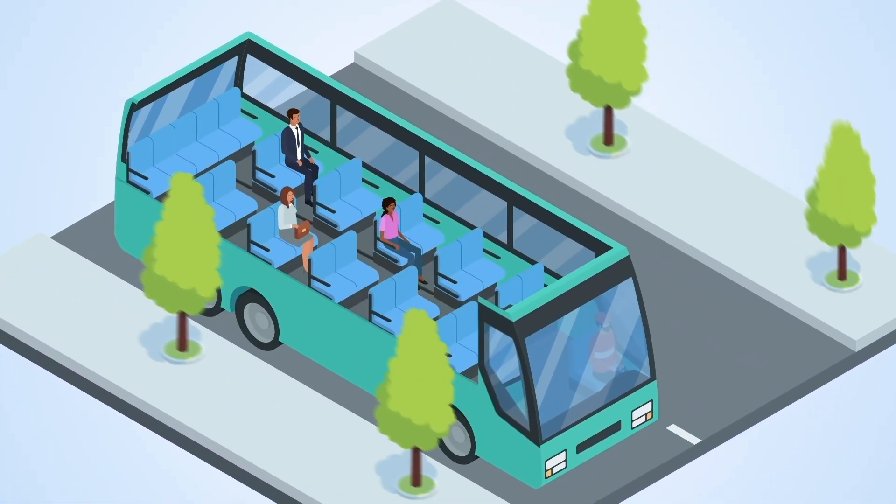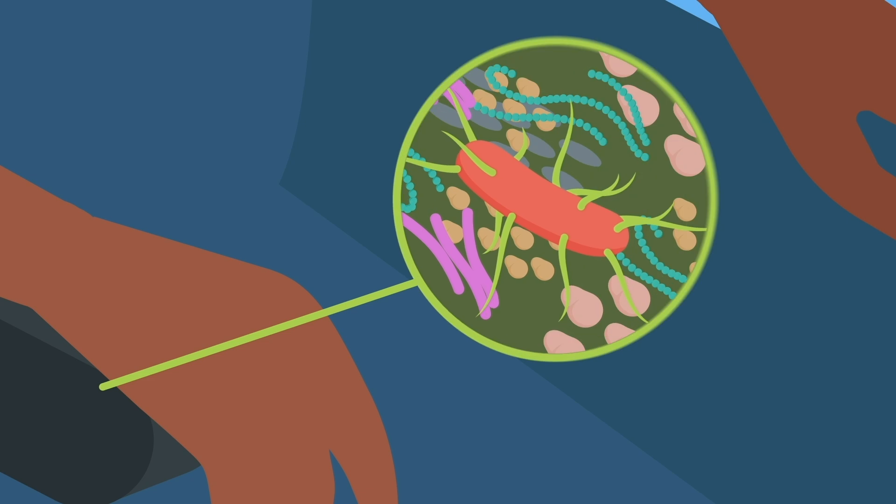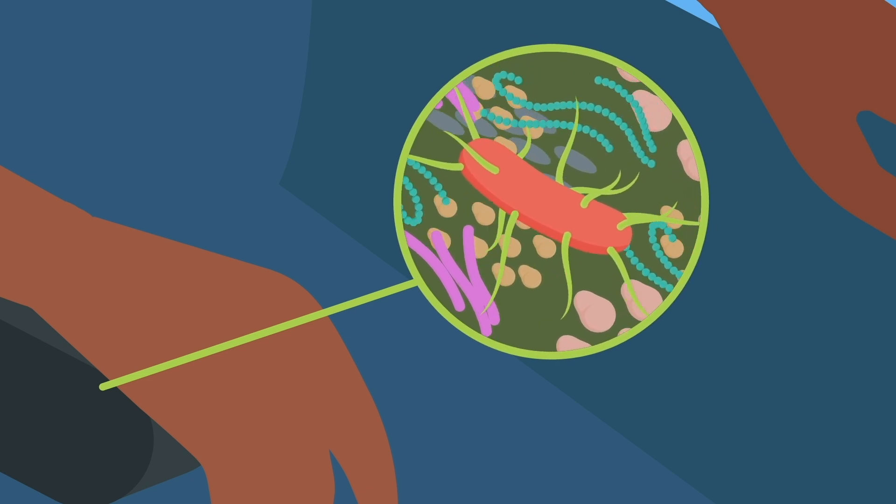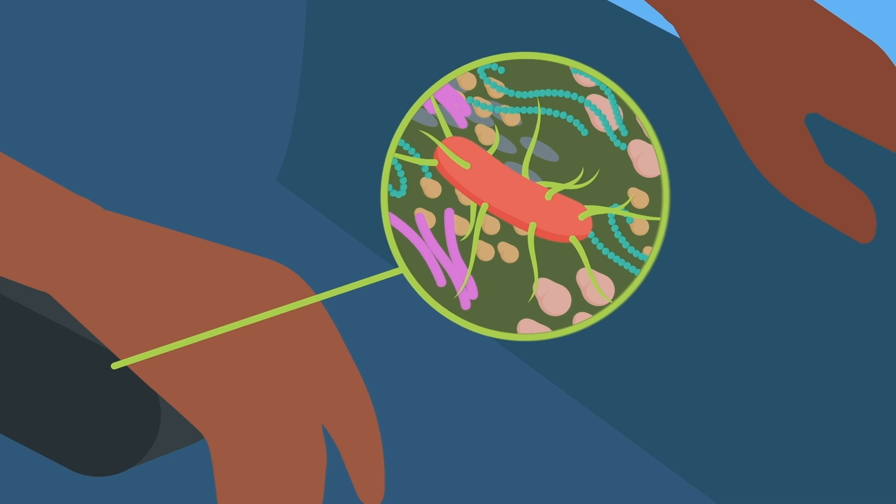Microbes, invisible to the human eye, are all around us. These include bacteria, viruses and microscopic fungi. Some can potentially make us ill and cause disease.